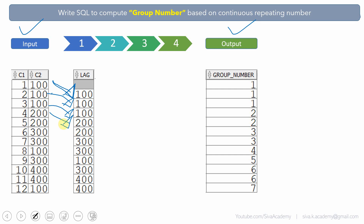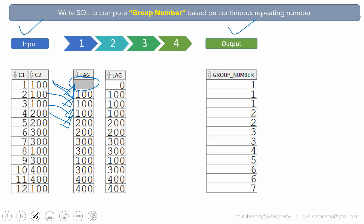The first row value will be null, so to handle this I am using the NVL function. Wherever there is a null, I am substituting 0. Obviously, only the first row value will be null, so NVL will print 0 there. Be careful: I am using 0 because the first value in column C2 is non-zero. Otherwise, you can use any other number that is not part of the C2 column. This is step 2.